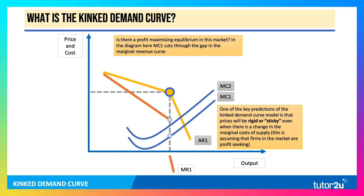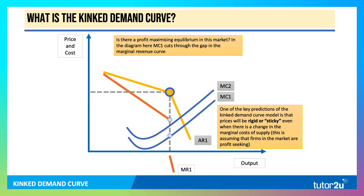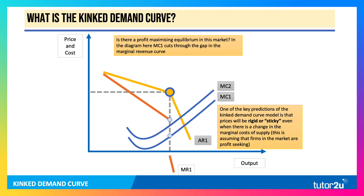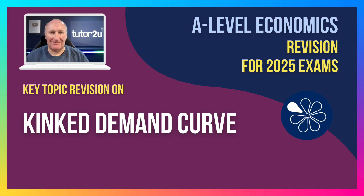One of the key predictions of the kinked demand curve is that even if costs go up — shown here as an increase from MC1 to MC2 — prices will be rigid or sticky, assuming firms are profit-seeking. Firms are reluctant to change price even when costs go up; they focus instead on non-price competition. That's a quick revision primer on the kinked demand curve.